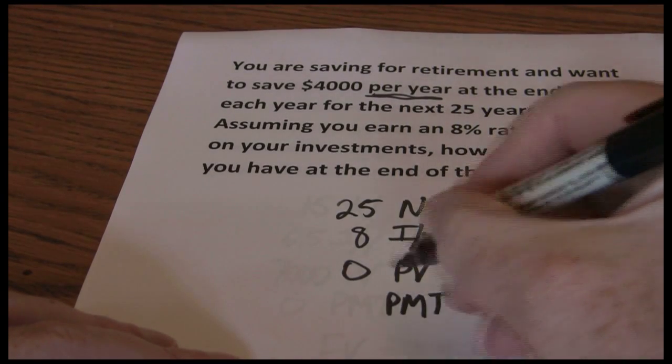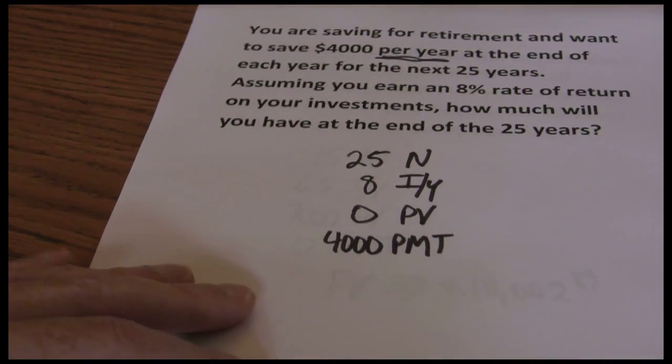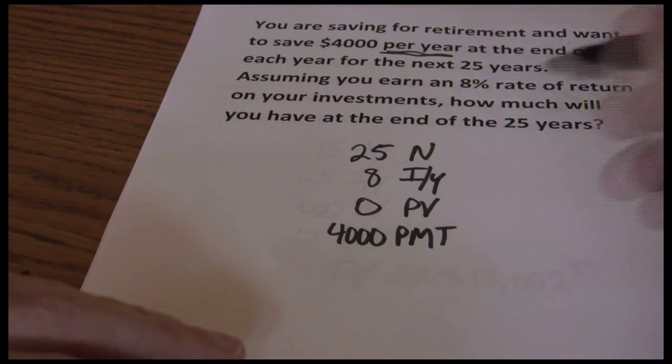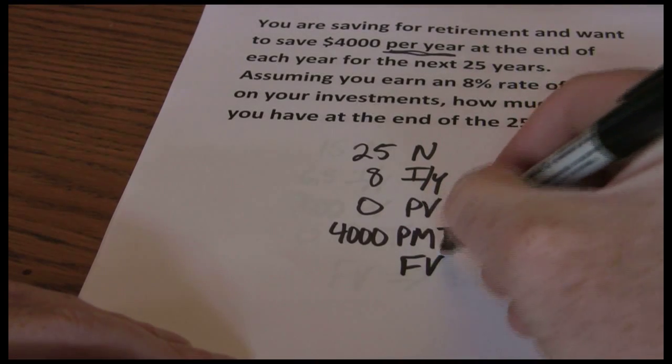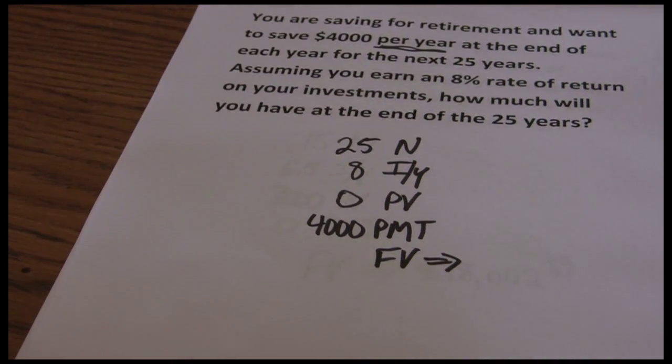And we're going to be saving $4,000 per year. So that $4,000 is our payment. That's our annuity stream. Lastly, we're solving for our future value. So now we've got our problem set up. We just want to go to our financial calculator again.